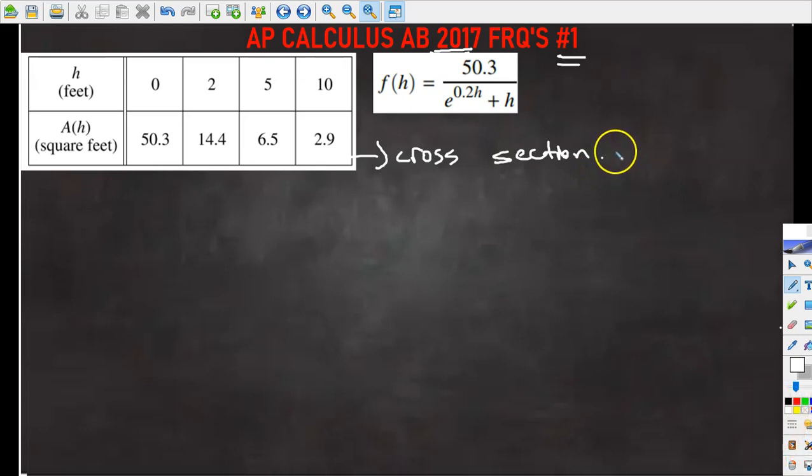And also we know that A is a continuous function and decreases as height increases. Selected values for A are given in the table as you can see right here. We're going to be using this function in the later part of this problem. So let's get started.